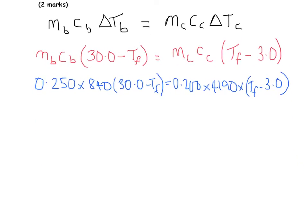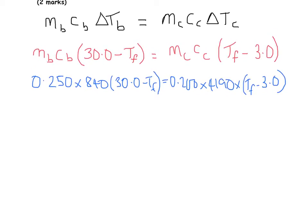I'm going to gather my T_f terms on the right hand side. So we've got 0.250 times 840 T_f plus 0.2 times 4190 T_f. That's on your right hand side.